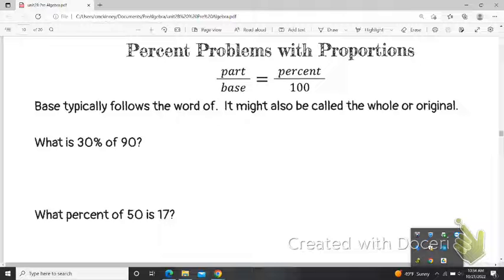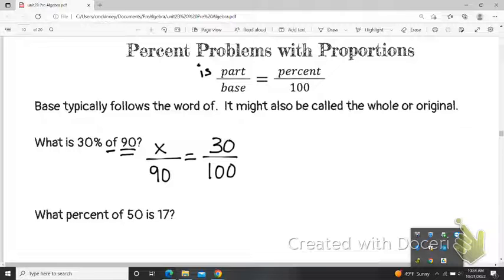What is 30% of 90? So 30 is over our 100, of 90. I see the word of, so what follows of is my base.